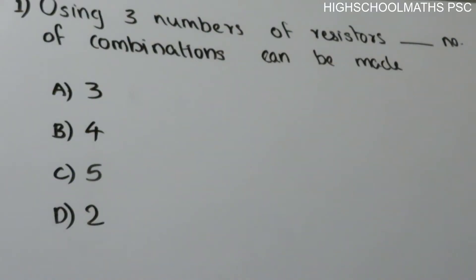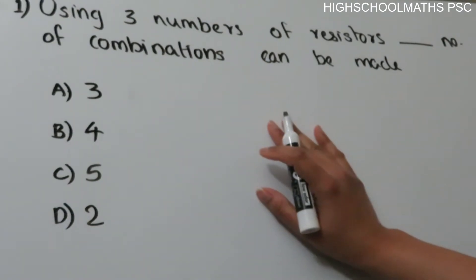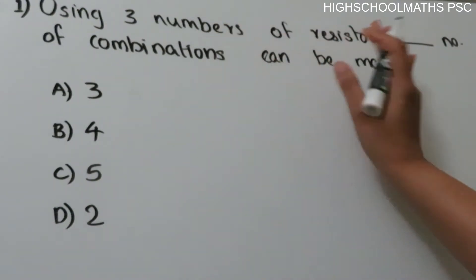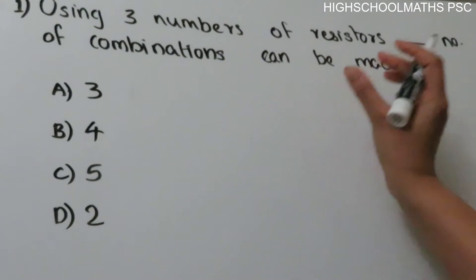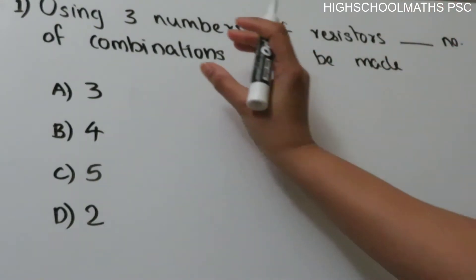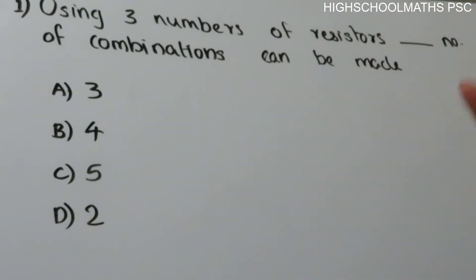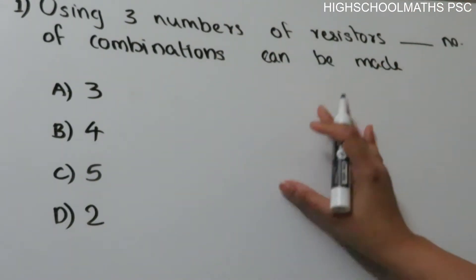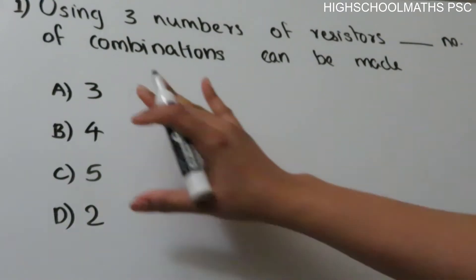First question: Using three numbers of resistors, how many combinations can be made? Option A: 3, Option B: 4, Option C: 5, Option D: 2. Now, we have three resistors. If we use these three resistors, we can see how many combinations are possible. There are four options.